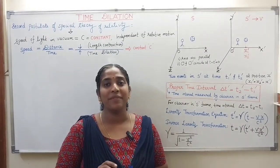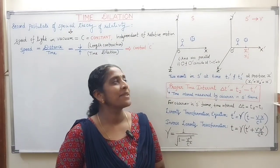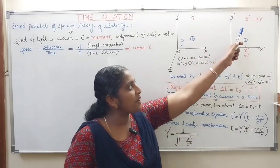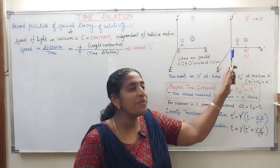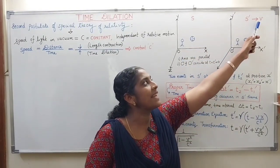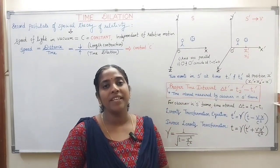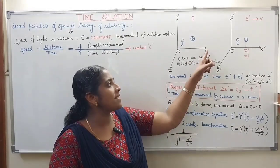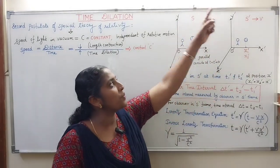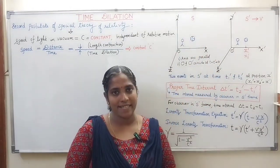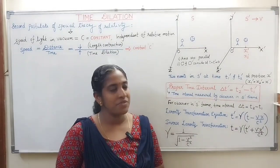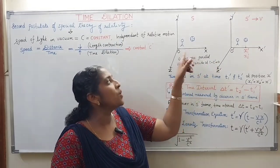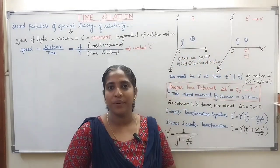To understand this concept, we consider two inertial frames of reference. The first is the S frame, which is at rest, and the second, S-dash, is moving along the positive X direction with a relativistic speed V. We assume the axes are parallel — X parallel to X-dash, Y to Y-dash, Z to Z-dash — and that at time T = T-dash = 0, the origins O and O-dash coincide.